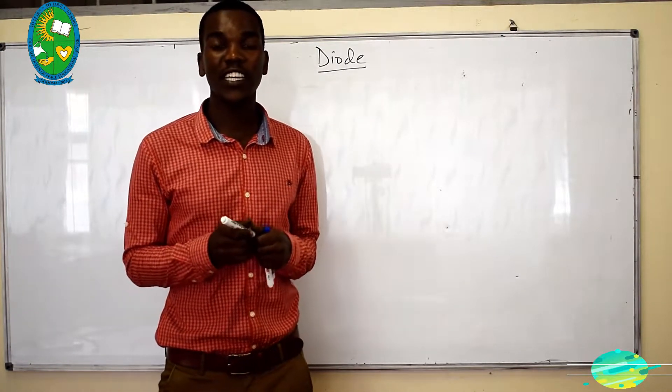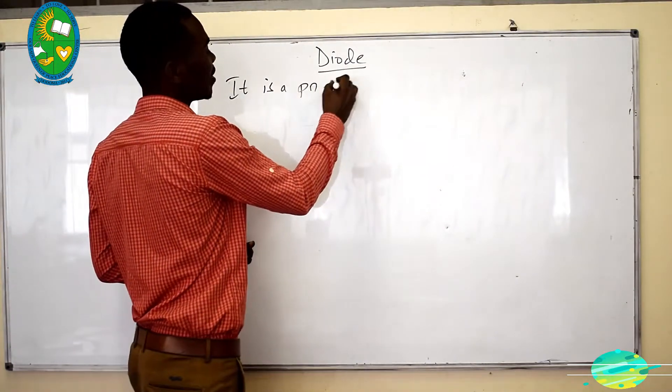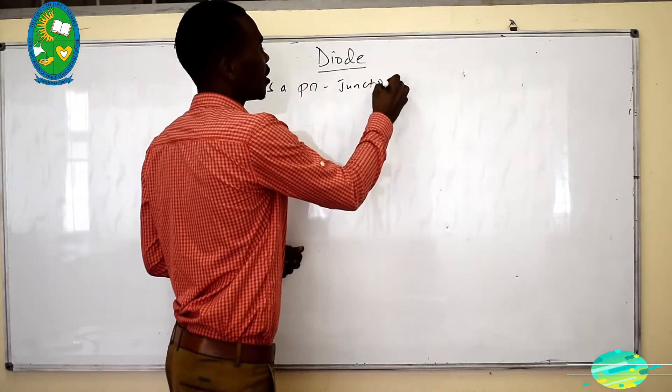A diode is a PN junction device, a PN junction device.